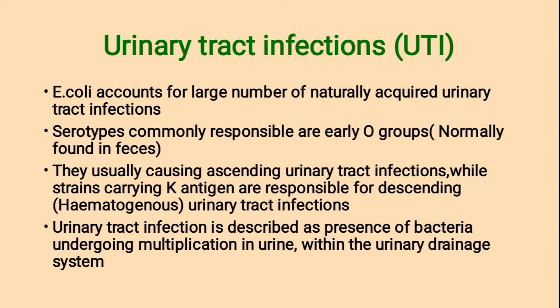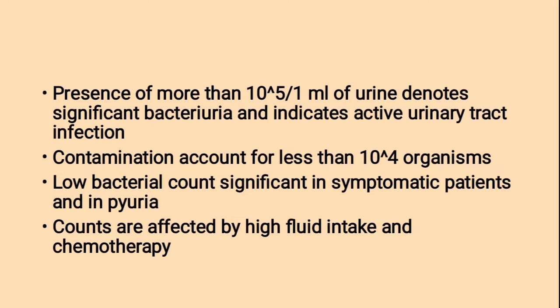Urinary tract infections. E. coli accounts for a large number of naturally acquired urinary tract infections. Serotypes commonly responsible are early O groups normally found in feces. They usually cause ascending urinary tract infections, while strains carrying K antigen are responsible for descending, that is hematogenous, urinary tract infections. Urinary tract infection is defined as presence of bacteria undergoing multiplication in urine within the urinary drainage system. Presence of more than 10⁵ per ml of urine denotes significant bacteriuria.